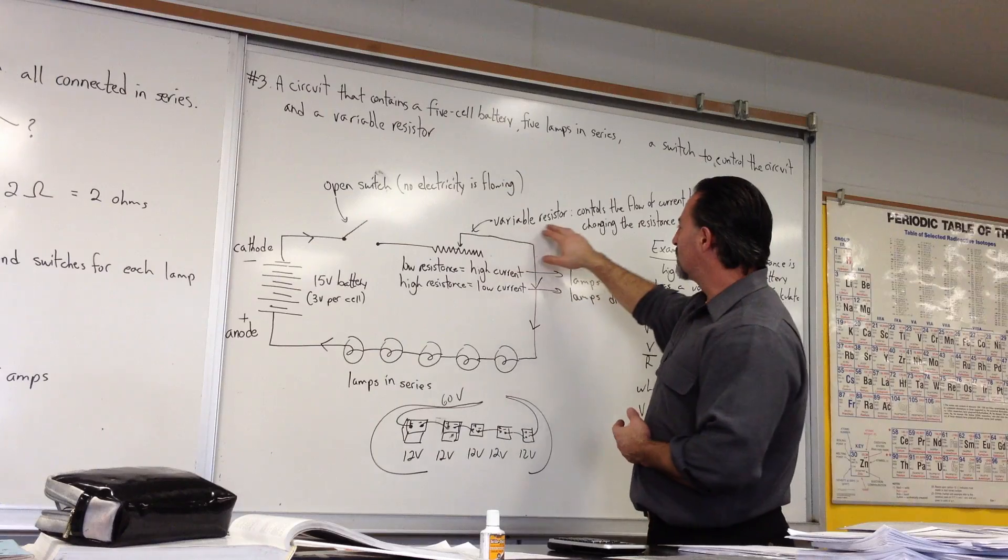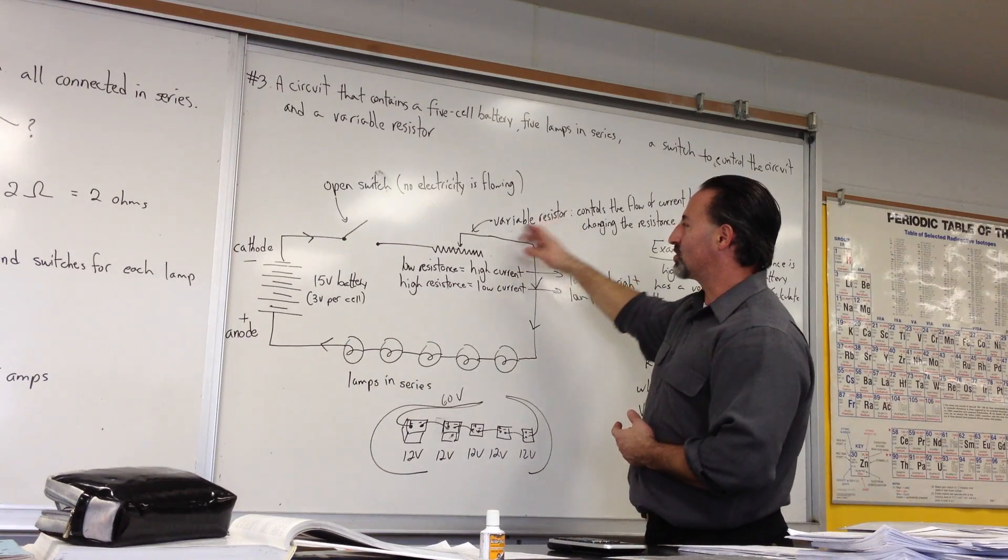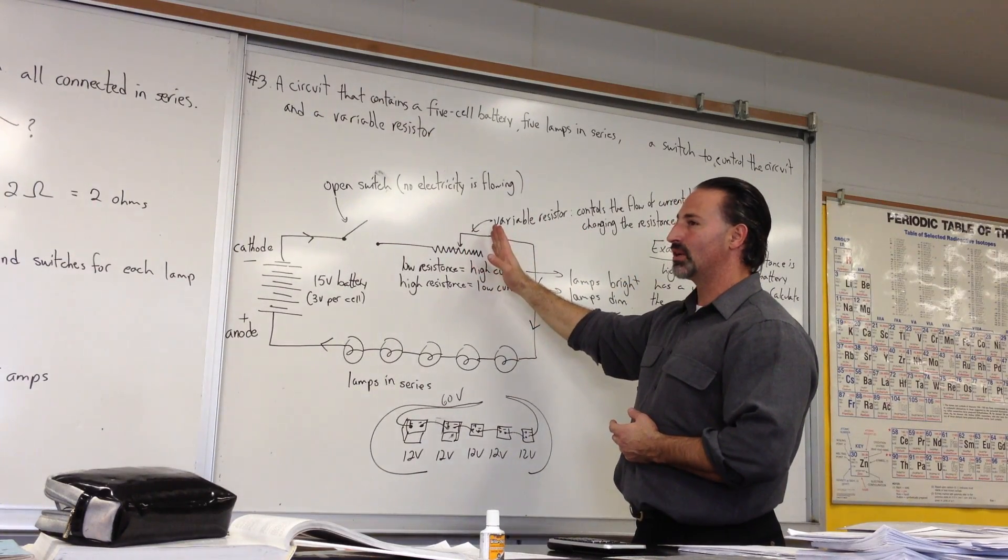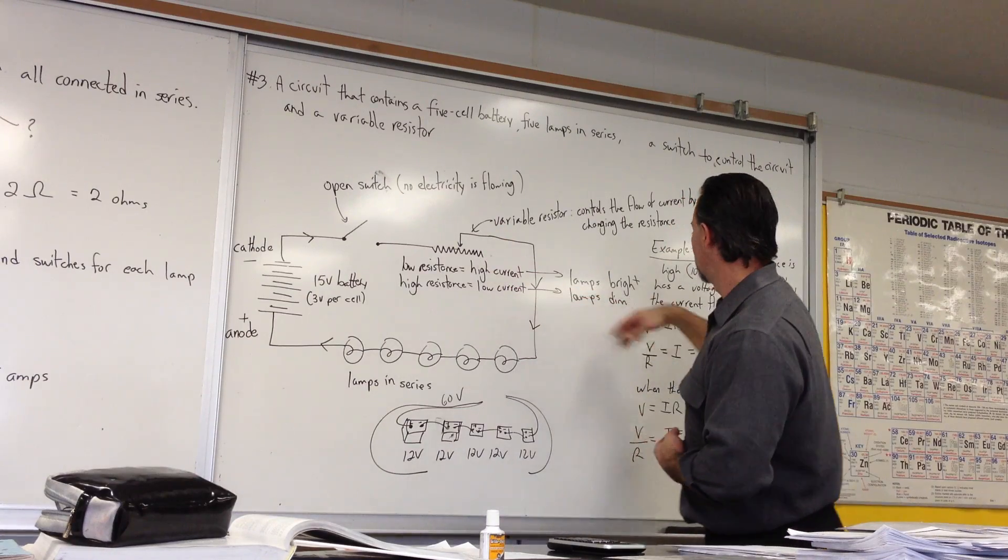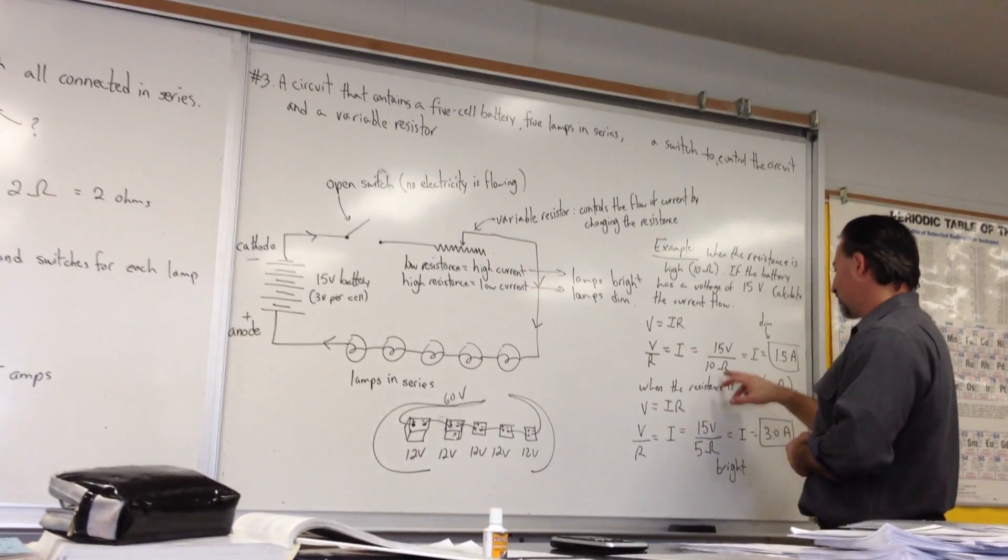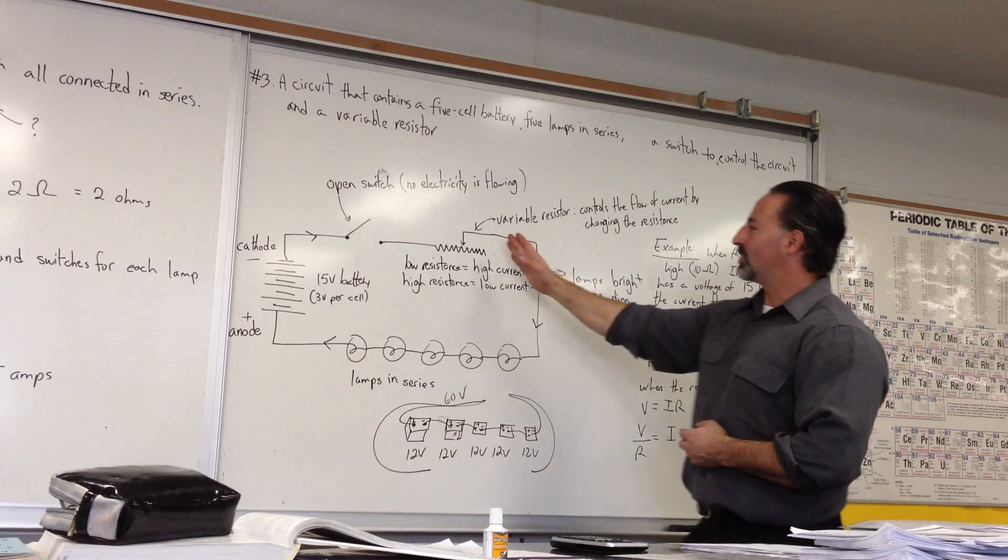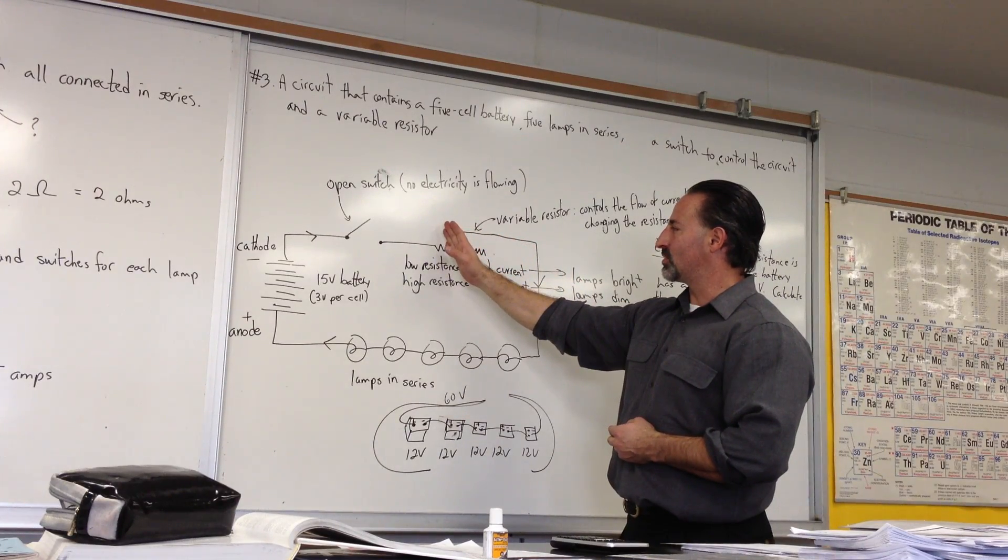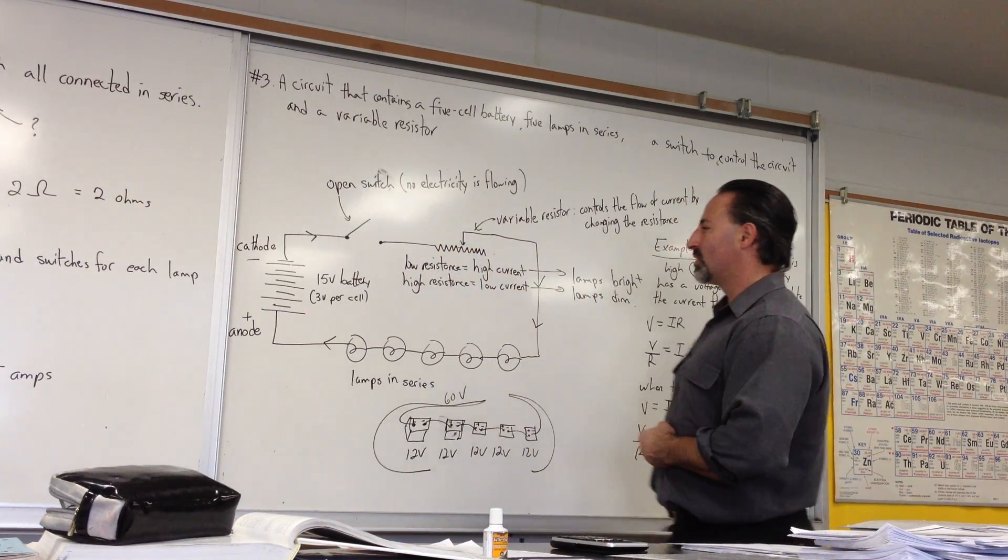And the result is that we get a variable resistor. So if you have the full resistor, it increases the resistance up to, we'll find out later, up to about 10 ohms. And if we have less of the resistor to pass through, then the resistance decreases.